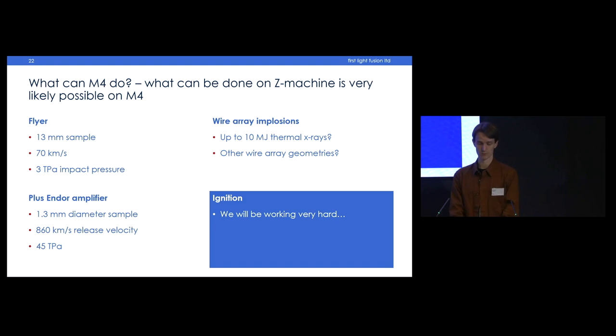Other loads - wire array implosions could be maybe up to 10 megajoules of thermal x-rays from these implosions. Other wire array geometries producing fancy, beautiful plasma objects of astrophysical significance and all that sort of good stuff. I don't want to talk about this too much but also didn't want to not put it on there. Of course we're going to be working really hard to make this a reliable, robust ignition platform. So if we succeed with that, then that platform could be available for doing fundamental science as well.